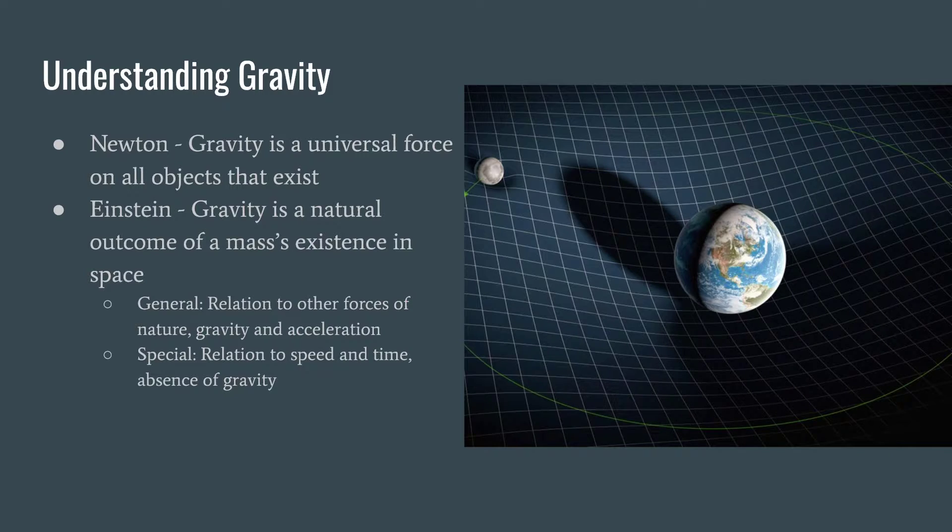And then Einstein, he developed a theory upon Newton, which was significantly more accurate so much so that it's literally what we use today. Einstein said that gravity is a natural outcome of a mass's existence in space. So everything has a gravitational pull and the larger an object is the more pull that that object has.